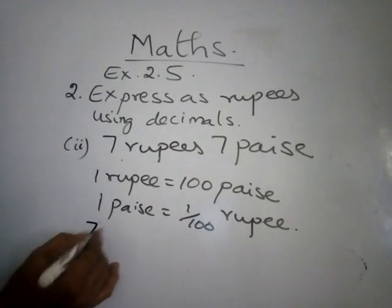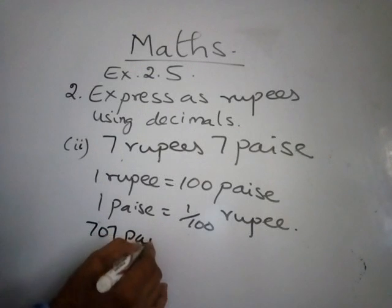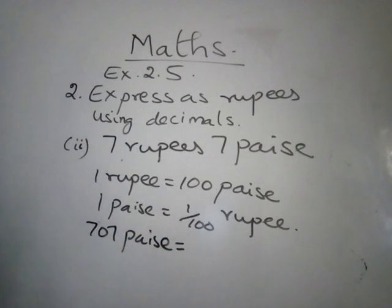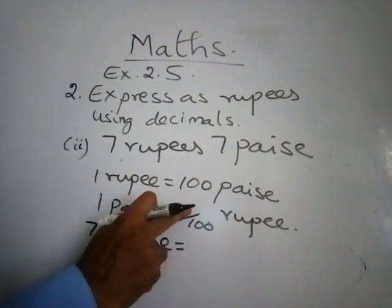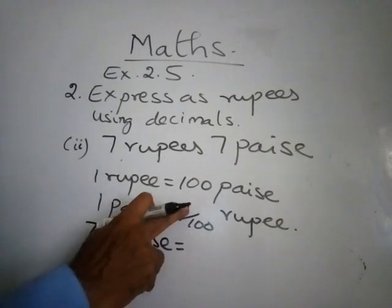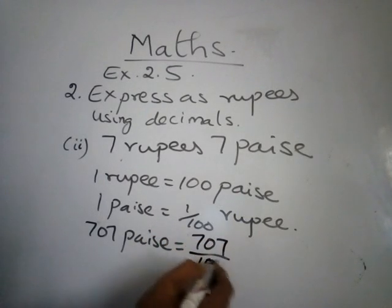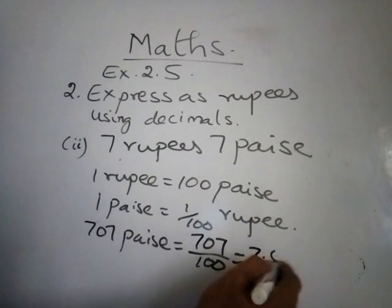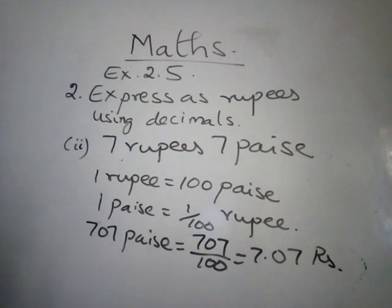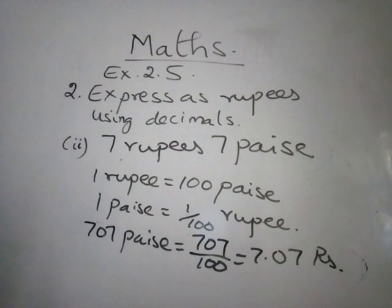Now this is 707 paise. What I said is, any number which is coming here will go there. Your last question, 7 paise went there. So 707 will go here. 707 by 100, which is nothing but 7.07 rupees. Please note it down. 7.07 rupees. Shall we move on to question number 3?